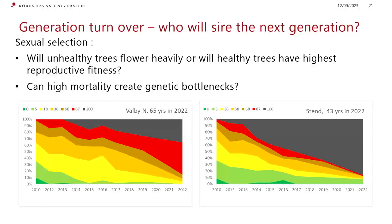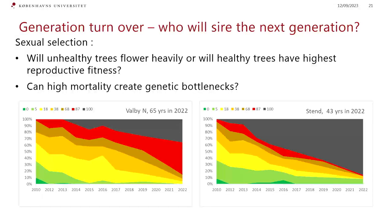One could say the majority are still unhealthy, so we could expect that unhealthy trees also produce pollen and seed and found the next generation. The question would be: is it really the healthy trees that found the next generation, or do we see a situation where unhealthy trees actually have more fruits? That could be one concern. Another concern could be if there are too few trees and a big bottleneck is created.